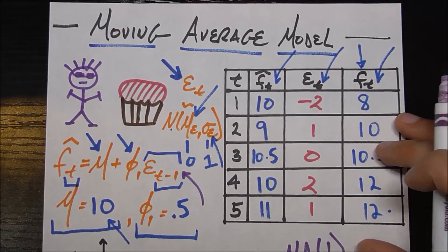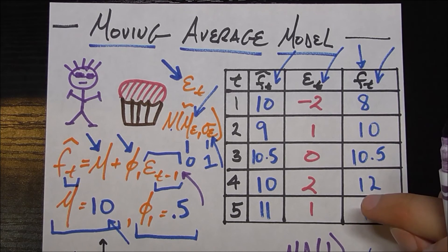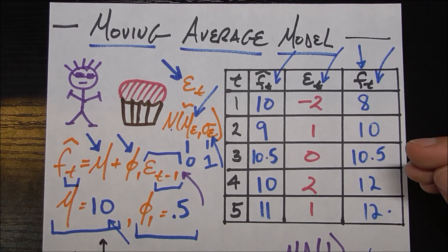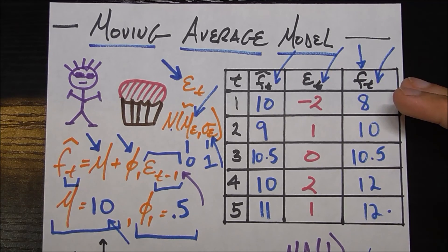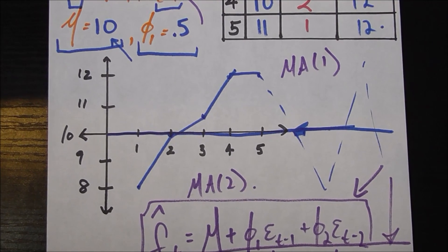So this is a moving average model. And along with the autoregressive model that we talked about in a different video, forms kind of the foundation of a lot of the models in time series analysis. And in the next video, what we'll talk about is how to know if some random time series that you're given might or might not be a moving average model. So until next time.